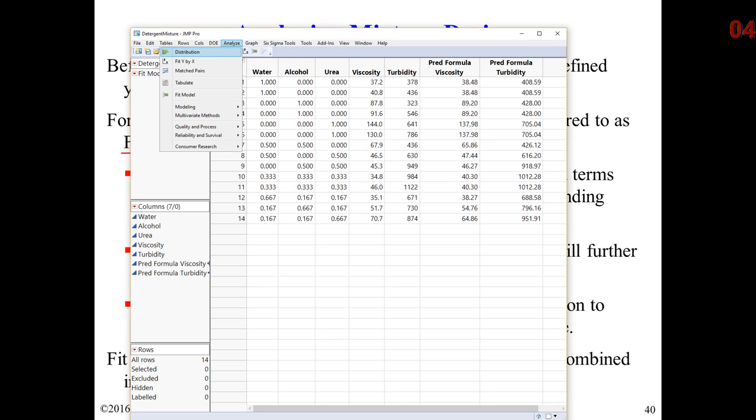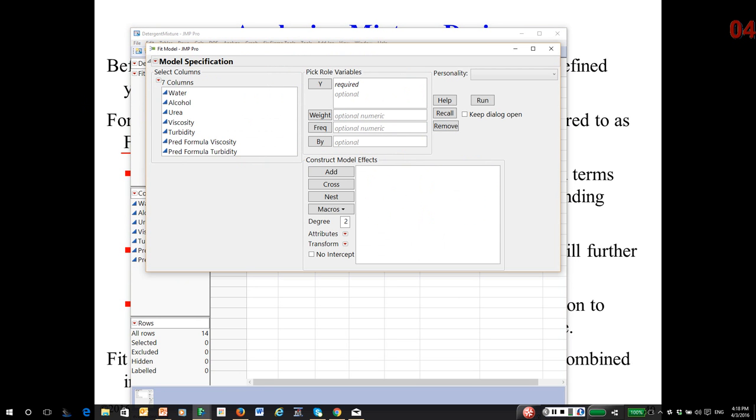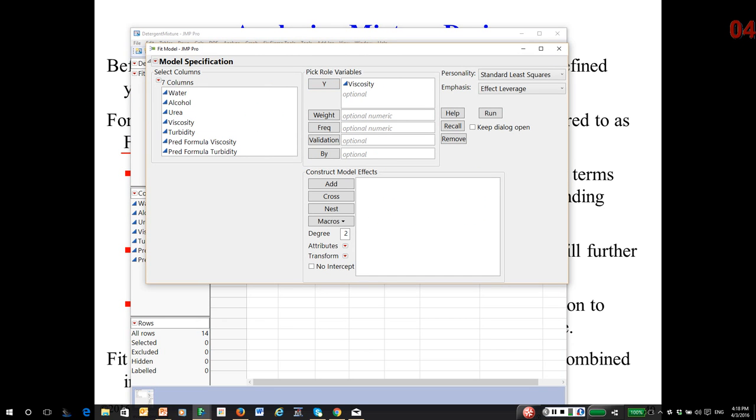So I go to Analyze, Fit Model. So I'm going to use viscosity as my response. I'll highlight my three ingredients or mixture factors. And then under macros, I'll pick mixture response surface. Highlight the three ingredients and cross them to put in the three-way nonlinear blending term. This is what we've already done.